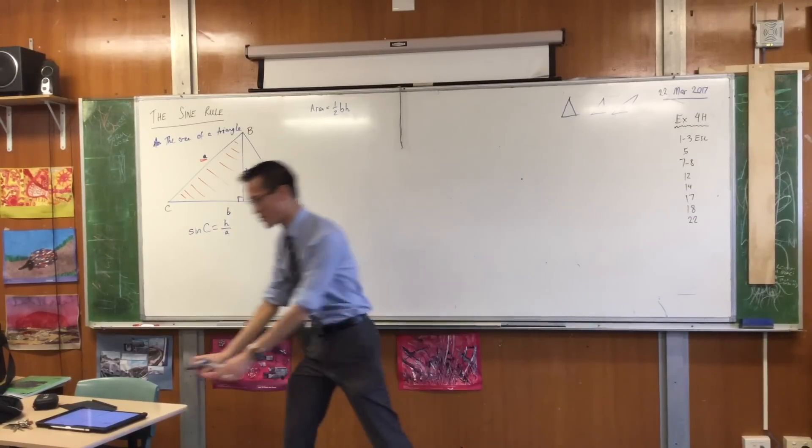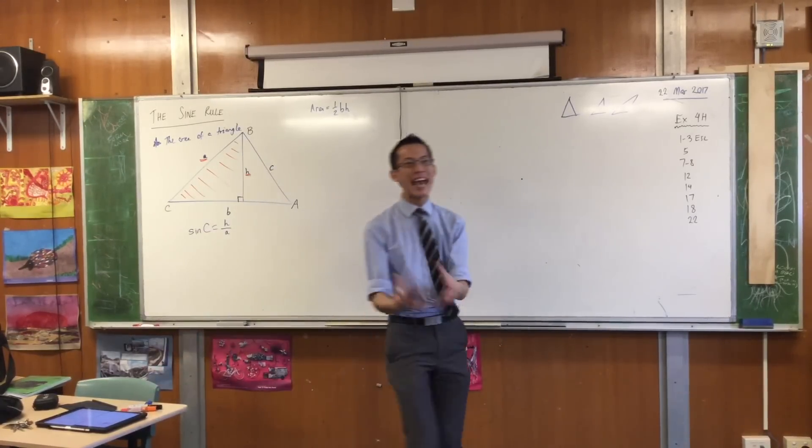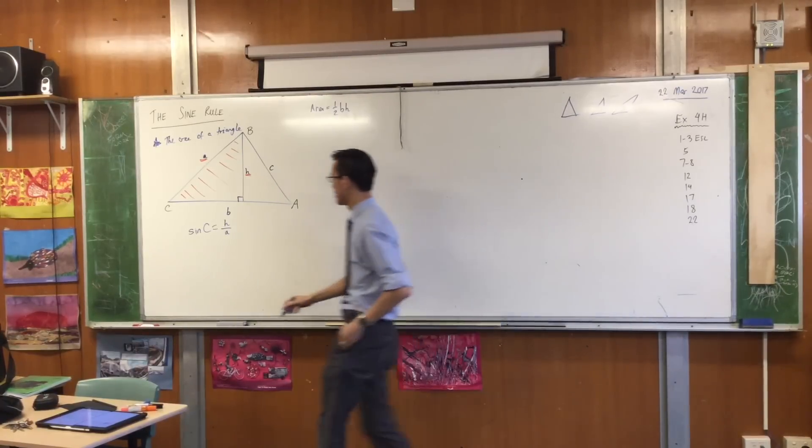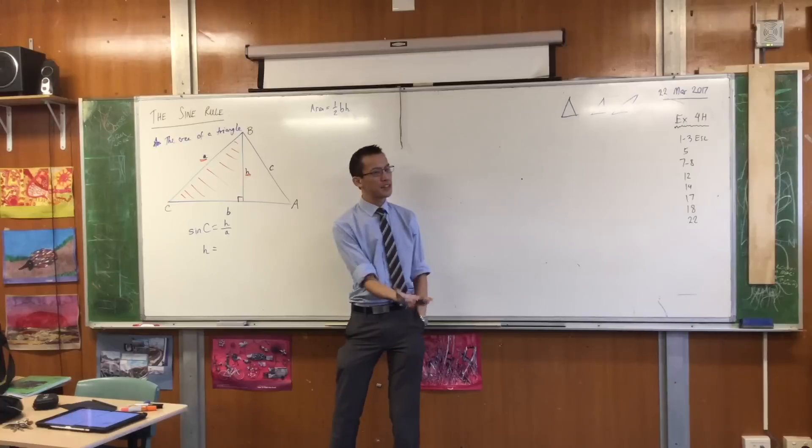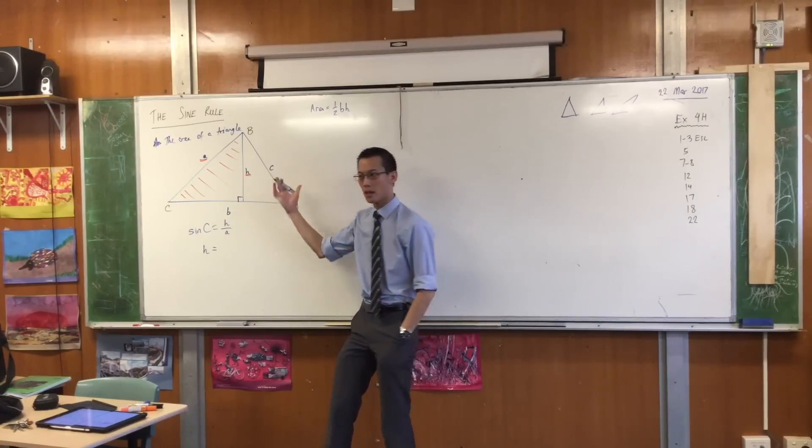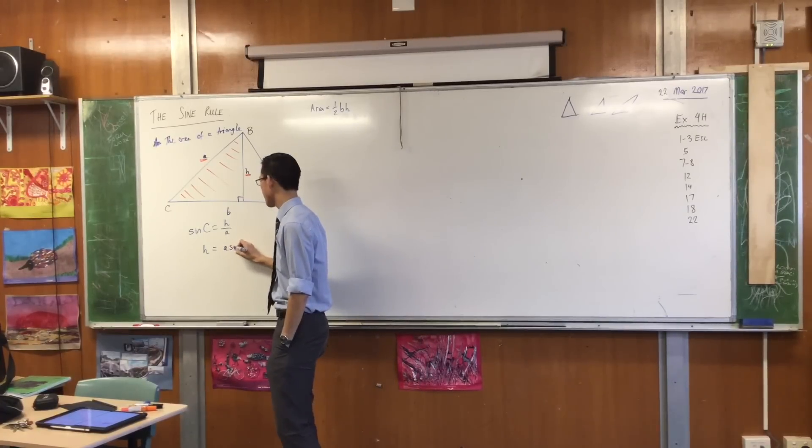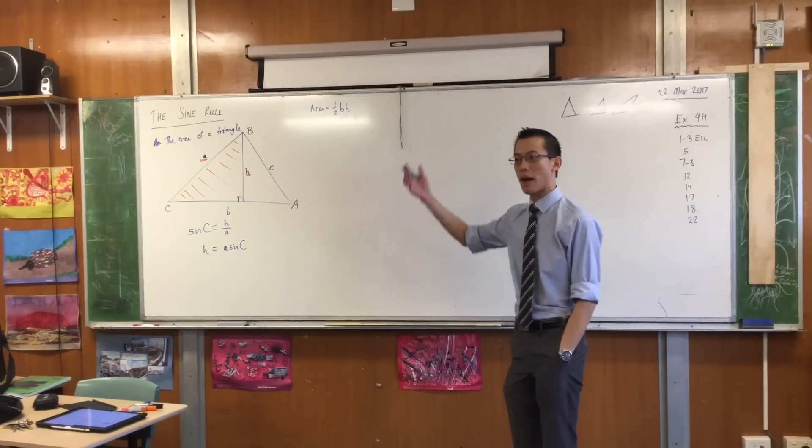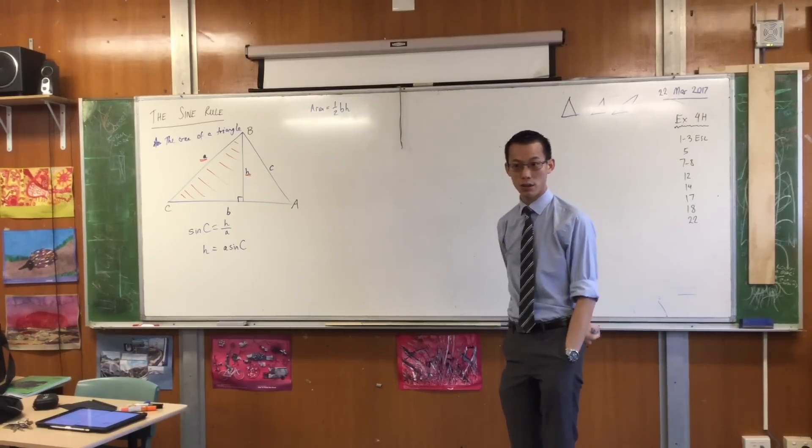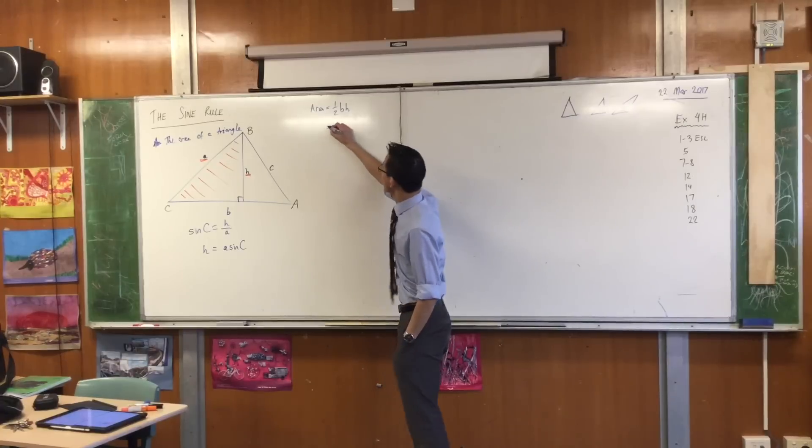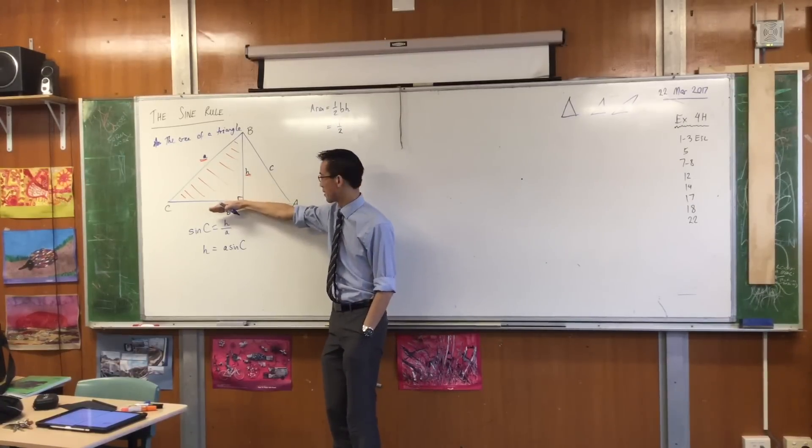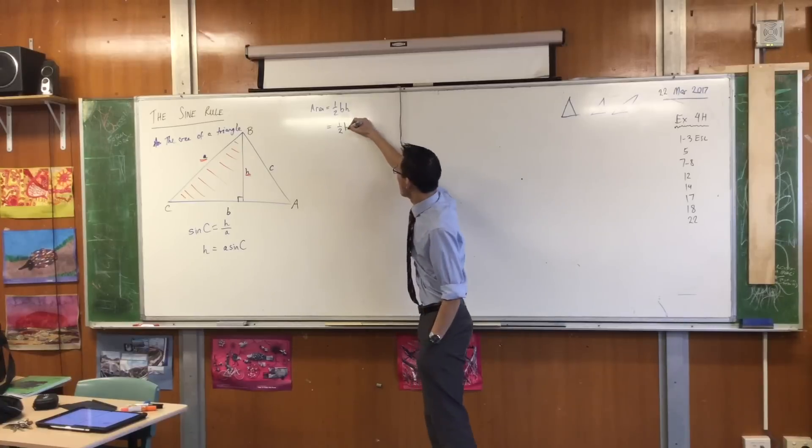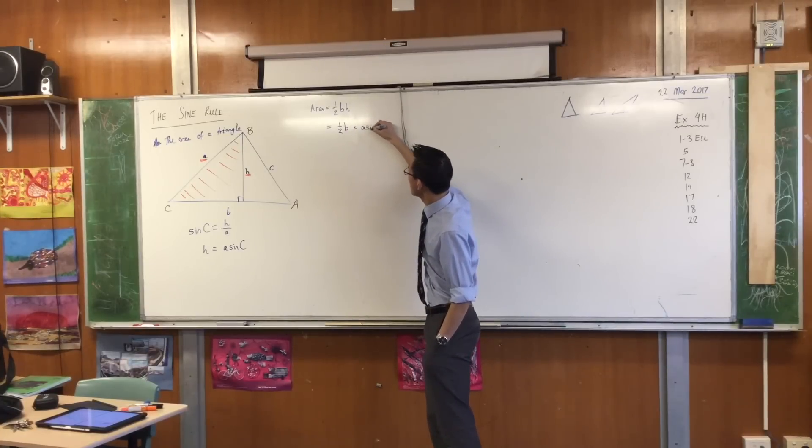Now remember, my goal in trying to write this down is to replace H with something. So I'm going to make H the subject here. H equals, all I have to do is multiply both sides by A. And I'm there. I'm not very far off. I'm going to return to my original area of a triangle formula. And I can say it's half base.